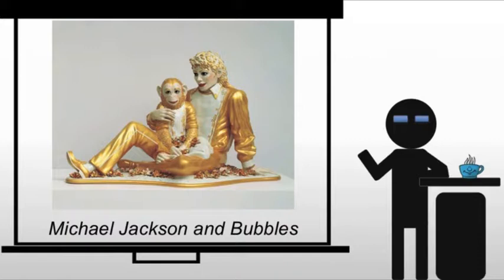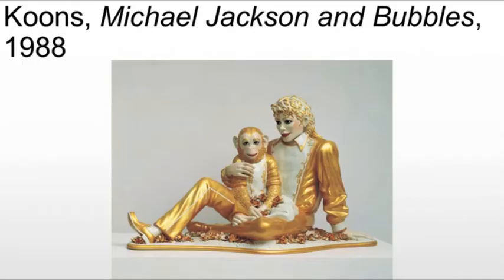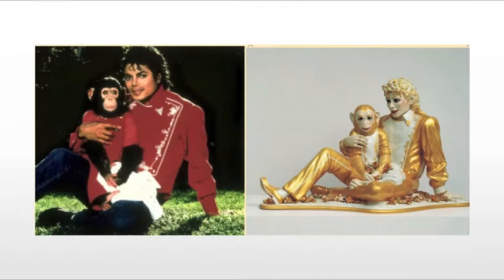We also have Michael Jackson and Bubbles, and this makes a lot more sense if you were alive in the 80s and 90s, at the point in history where Michael Jackson was particularly famous. To many people today, especially those in college, this may have less relevance, but we still deal with the piece either way. Koons transformed a famous photograph of the late pop star and his pet chimpanzee Bubbles into a sculpture — and it's not just a sculpture.